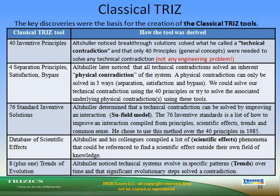The 76 standard inventive solutions: Altshuller determined that a technical contradiction can be solved by improving an interaction. The 76 inventive standards is a list of how to improve an interaction, compiled from principles, scientific effects, trends, and common sense — he chose this method over the 40 principles in 1985. Altshuller and colleagues also compiled a database of scientific effects and phenomena. Additionally, the 8+1 trends of evolution show that technical systems evolve in specific patterns over time, with significant evolutionary steps solving a contradiction.